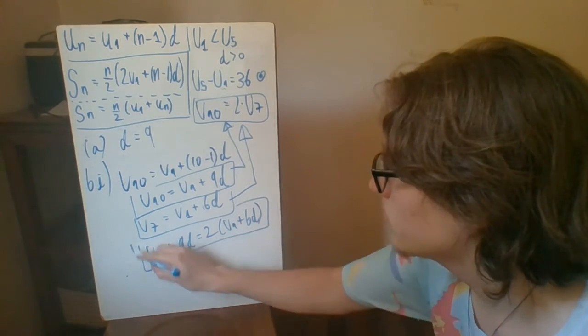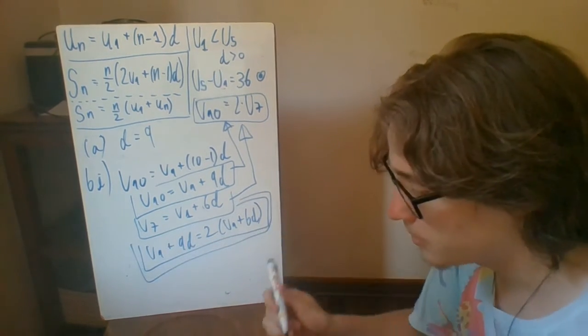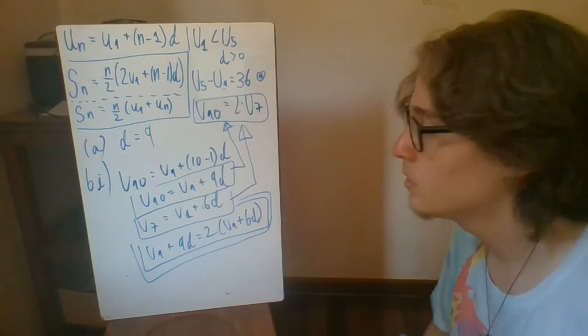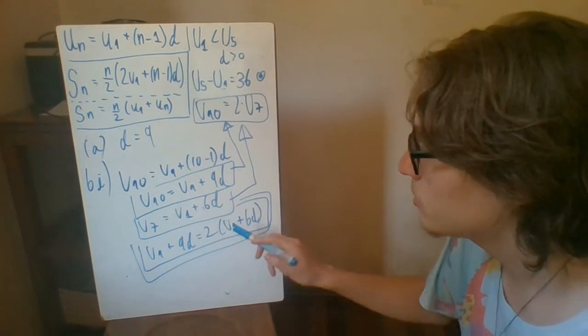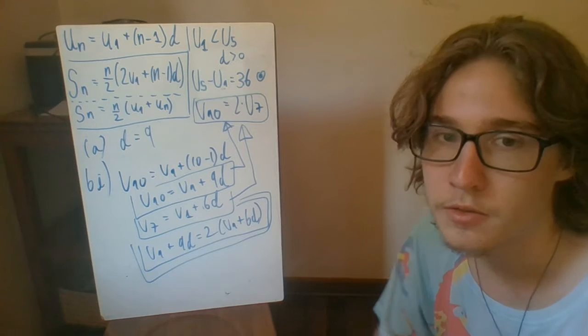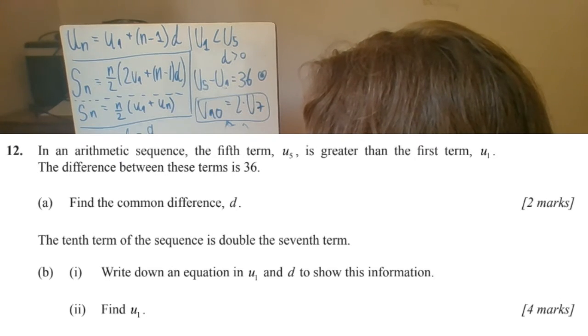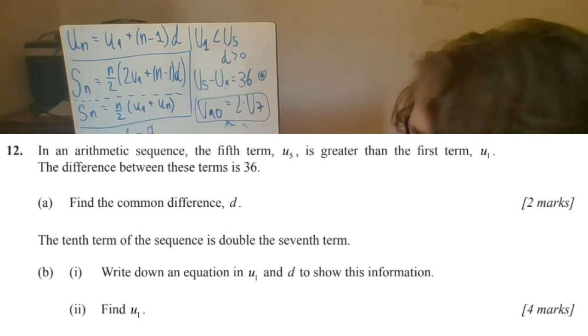And this in the mark scheme is good enough. You can distribute the 2 or whatever, but this is good enough. Part 2 tells us to find u1. So conveniently, we can use what we got from part 1 to get part 2.